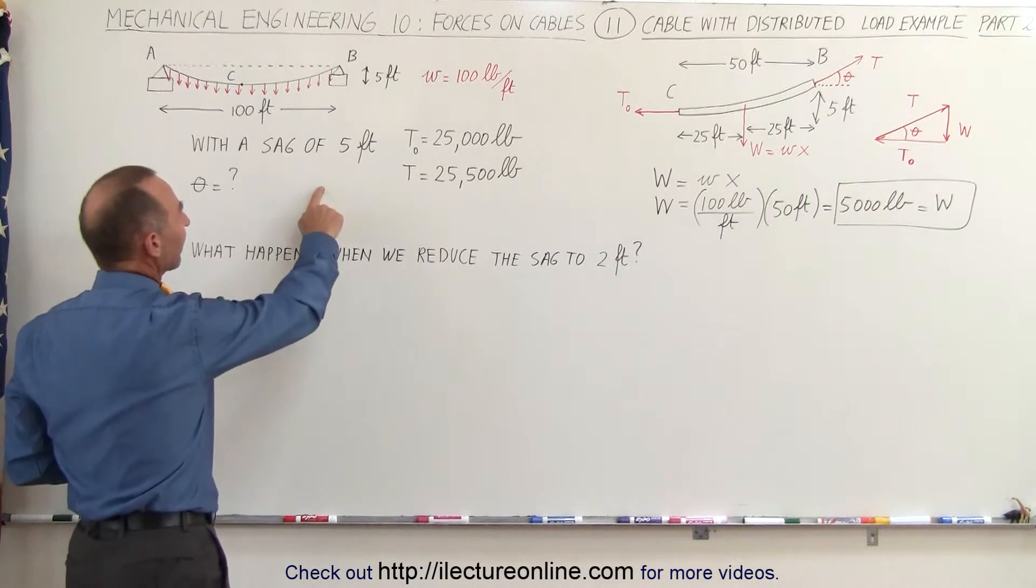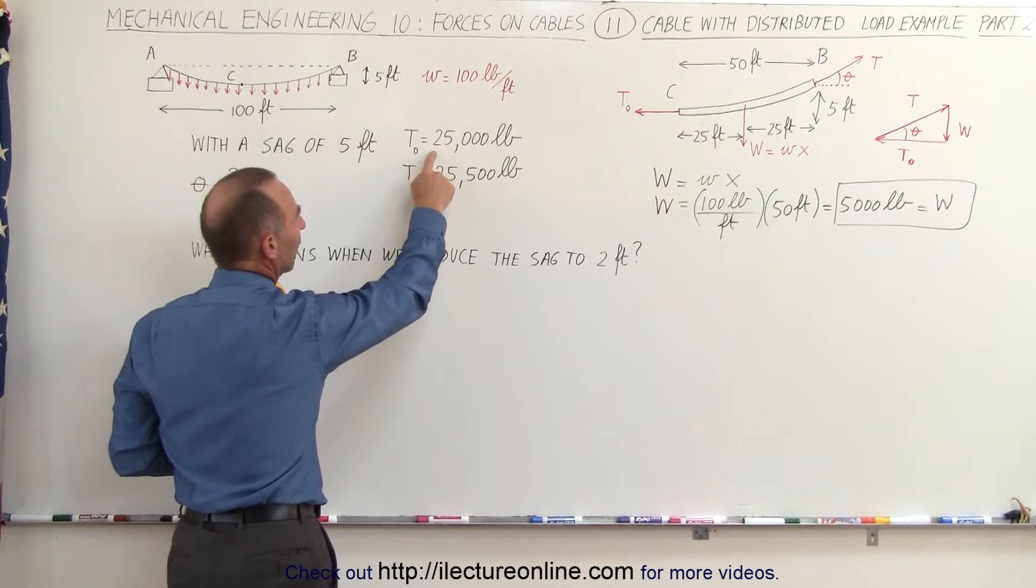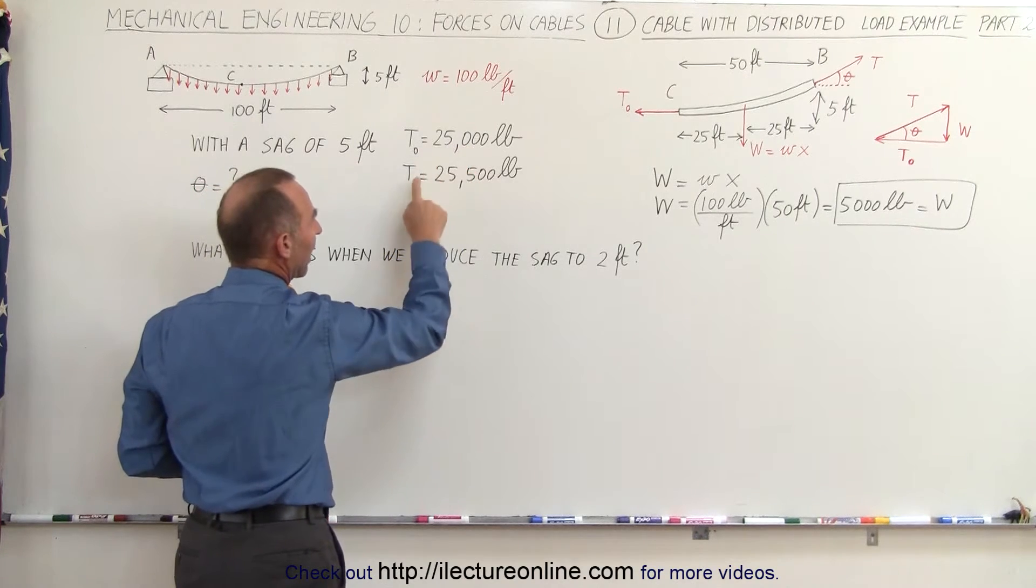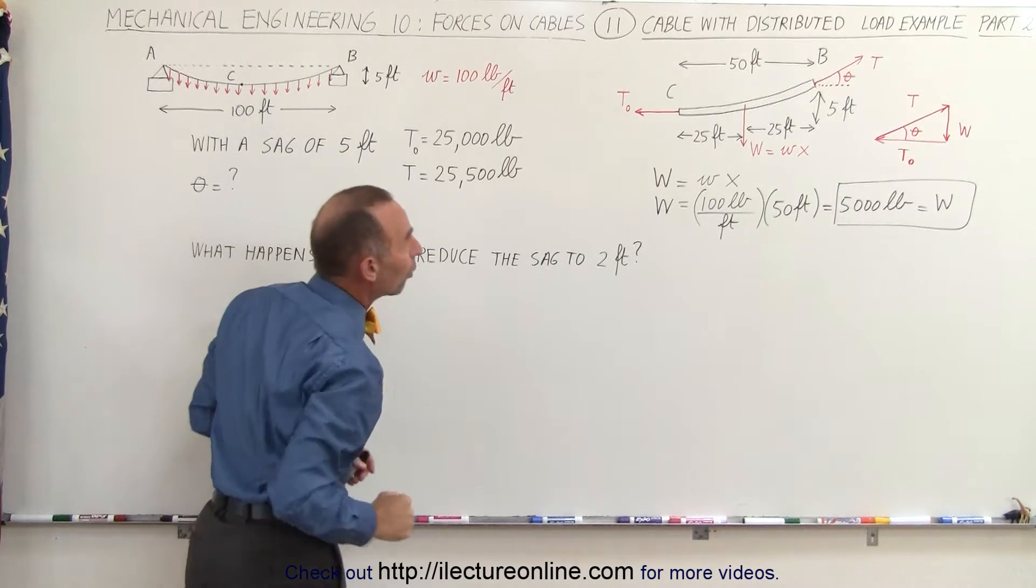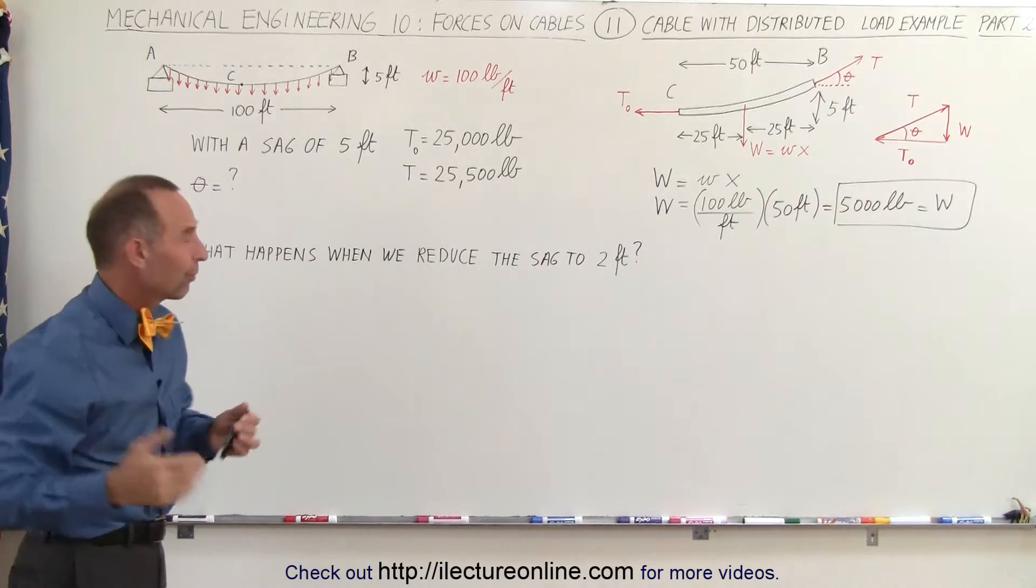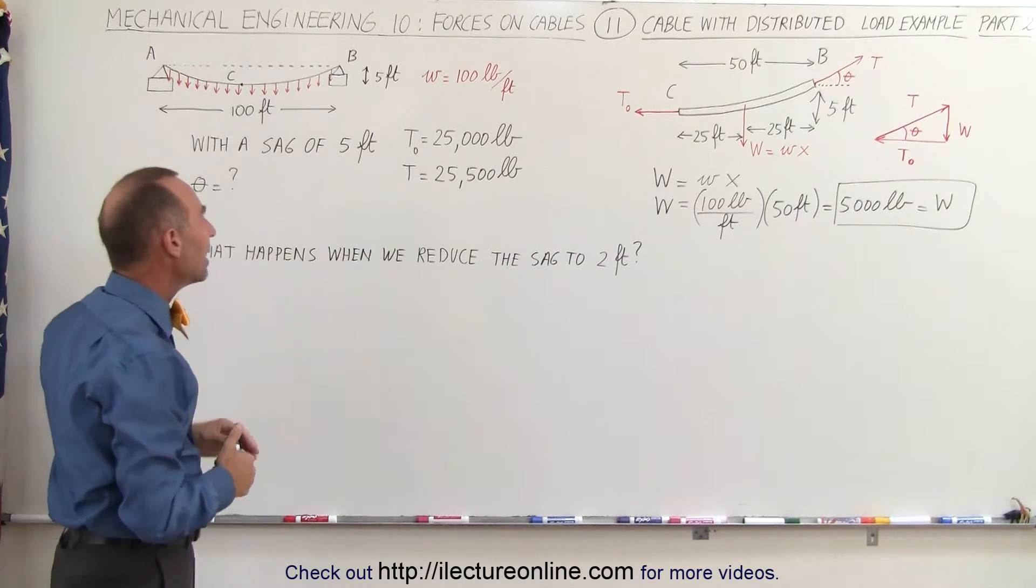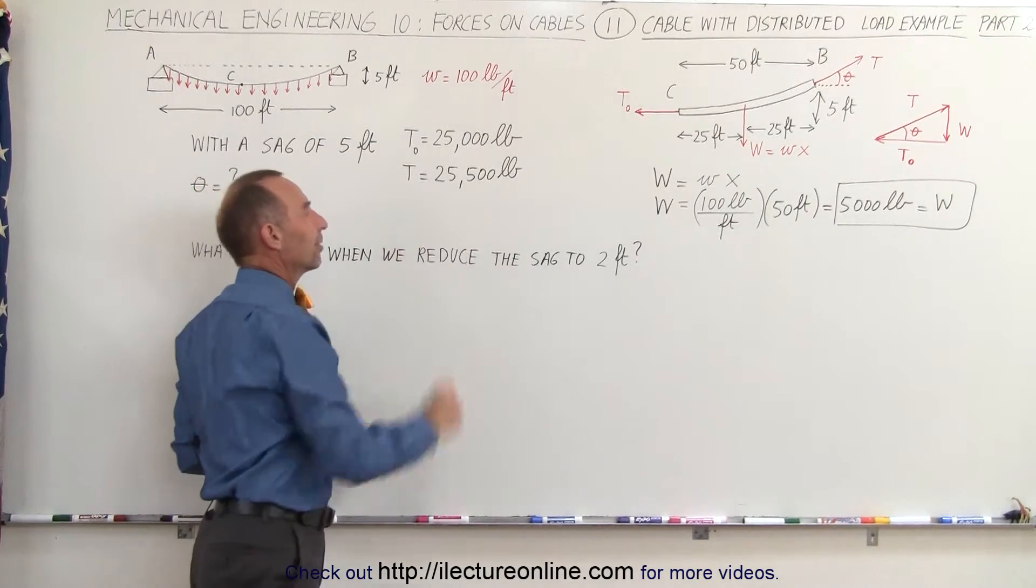We also discovered that the tension in the horizontal direction was 25,000 pounds and the tension at the endpoint at B, and of course since there's perfect symmetry here it would be the same at A, would be 25,500 pounds.